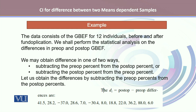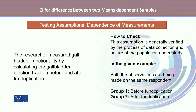We shall perform the statistical analysis on the difference in pre-op and post-op GBEF. We may obtain these differences in one of two ways: subtracting the pre-op percent from the post-op percent, or subtracting the post-op percent from the pre-op percent. Here, we obtain the differences by subtracting the pre-op percent from the post-op percent, giving us D — the difference between the pair of observations. Hence, we have 12 differences obtained.